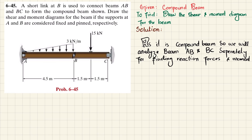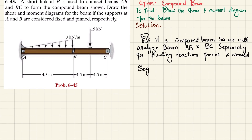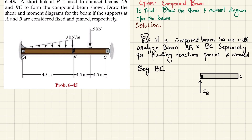First we will take segment BC and draw the free body diagram. Point B is on the left and point C is on the right. When you remove the link, you have a reaction force at B represented as Fb, and a 15 kN load. When you remove the pin support at C, you have a reaction force Cy. The distance between the load and C is 1.5 meters, and from B to the load is also 1.5 meters.